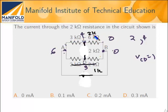This is 2 and 2, so 2 into 2 divided by 2 plus 2 is 1k. So I got the equivalent resistance for these two parallel combinations, and you can see that these two are in series, so the effective resistance is 3k.